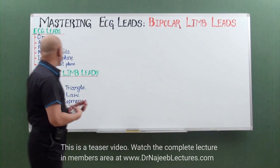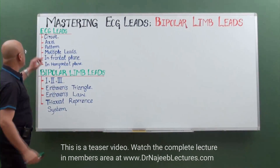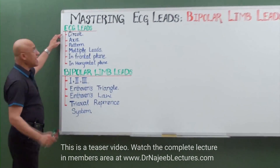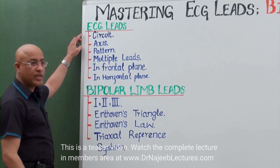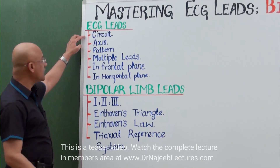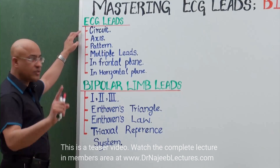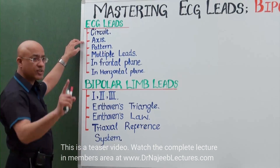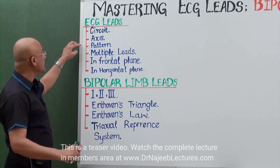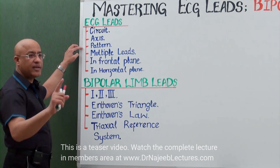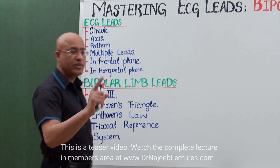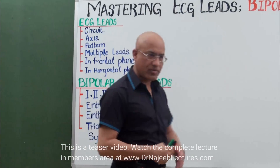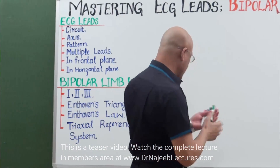When we talk about ECG lead, we have to learn it at three levels: ECG lead as a circuit, ECG lead and its axis, and ECG lead and the pattern derived from it. So let's start with it.